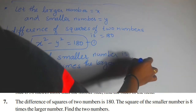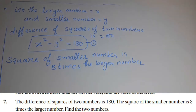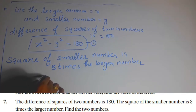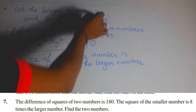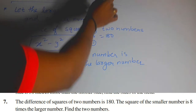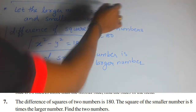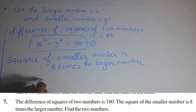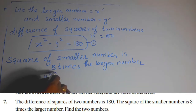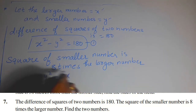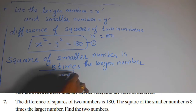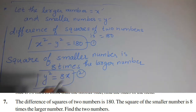The larger number is x and the smaller number is y. So the square of the smaller number, y squared, is equal to 8 times x. Let this be equation number 2.